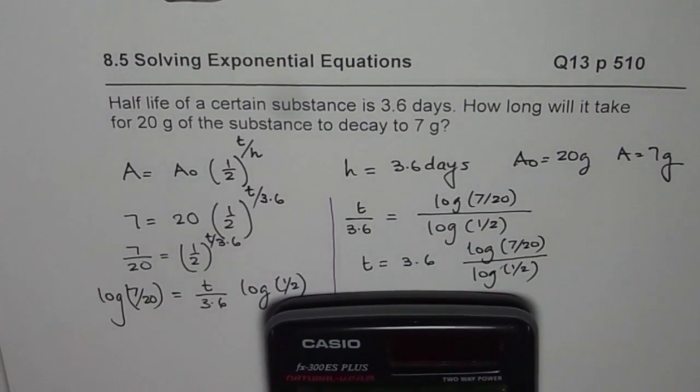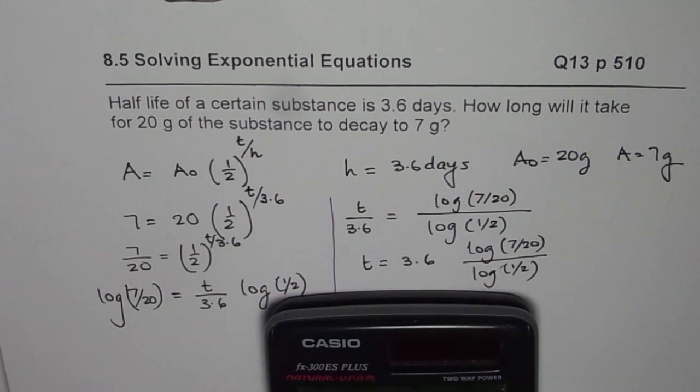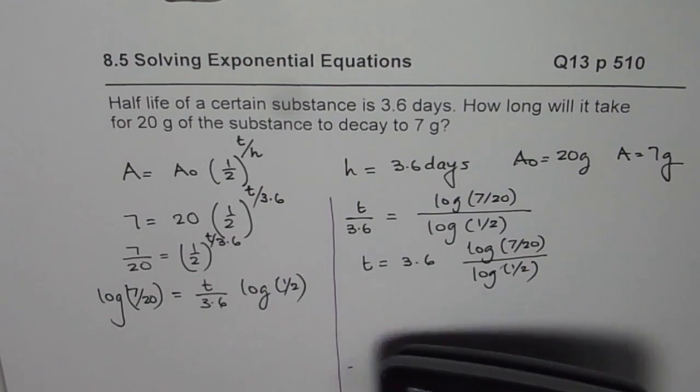So it is 3.6 times, within brackets, we have log of 7 divided by 20, bracket close. And then we have divided by log of half, so it is 0.5, bracket close. So we get equals to 5.452.